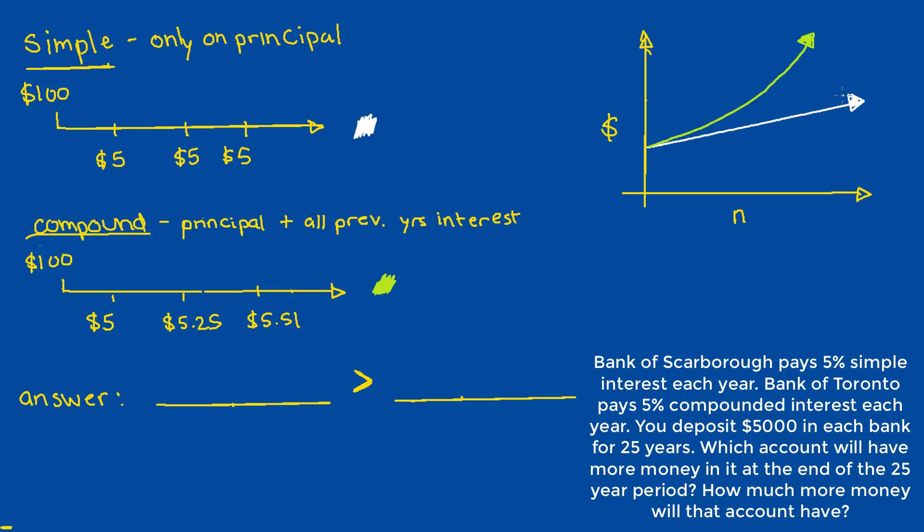We can see that the white line grows uniformly, and the green line grows at a faster rate the further on the x-axis we go. And so, quickly, the compound interest account outpaces the simple interest account. And our answer is that compound interest is greater than simple interest.